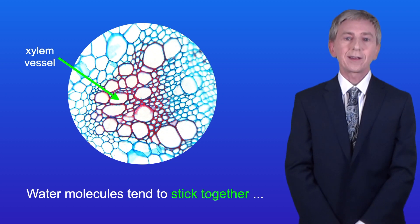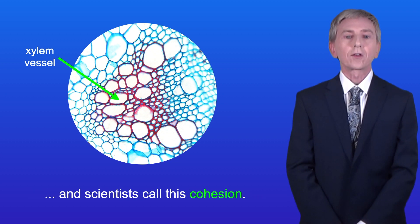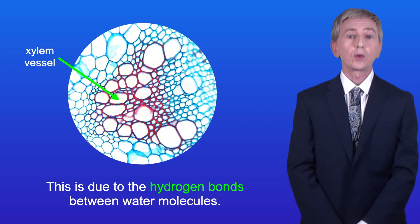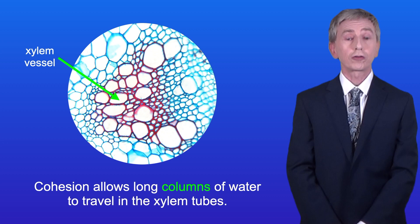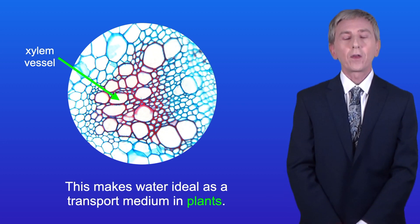Water molecules tend to stick together and scientists call this cohesion. This is due to the hydrogen bonds between water molecules. Cohesion allows long columns of water to travel in the xylem tubes and again this makes water ideal as a transport medium in plants.